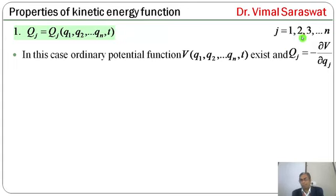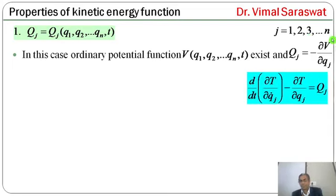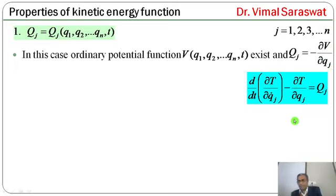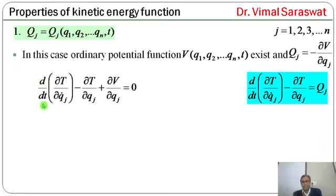So Qj = -∂V/∂qj, where V is the ordinary potential energy function. J runs from 1 to N. Now substituting into Lagrange's equation of motion: d/dt(∂T/∂qj_dot) - ∂T/∂qj + ∂V/∂qj = 0.